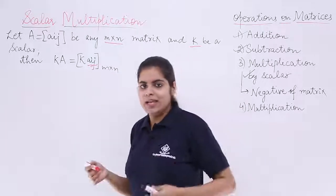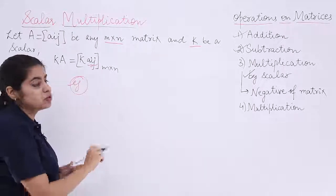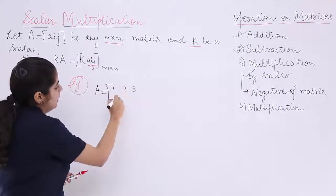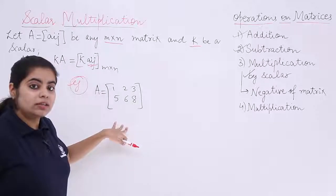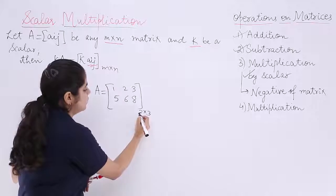Still not understood? Let's see an example. I take a matrix A, something like this. What is the order? There are two rows and three columns, so it is a two by three matrix.